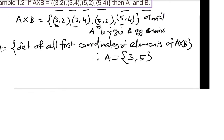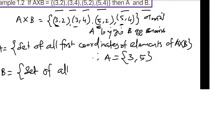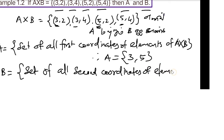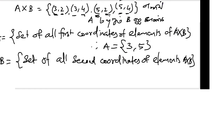Find B, which equals the set of all second coordinates of elements of A cross B. The second coordinates are 2 and 4. So, B equals {2, 4}.